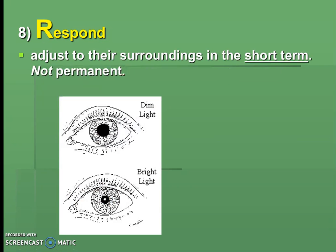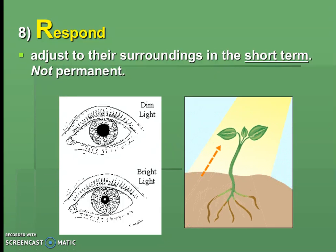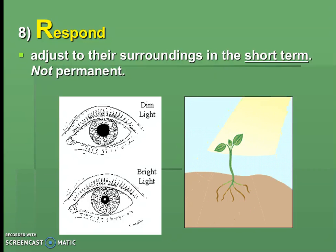Last but not least, R is for Respond. All living things in the short term have to be able to deal with change. For example, if a flashlight shines in your eye, your pupil will dilate or constrict briefly to adjust — and when it gets dark again, your pupil opens back up. This is not permanent. Similarly, plants respond to light in the short term by moving toward it.